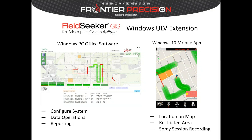You can use the office software to import shapefiles that have restricted areas or predefined line spray routes, or export data in KML or shapefile format to use in another map or GIS system. The reporting option gives you the ability to print or export different spray session reports with or without a map. The Windows 10 tablet sits in the truck cab alongside the sprayer controller, and the mobile app records spray session information and allows the driver to see where they are on the map, nearby restricted areas, and whether the sprayer is on or off.